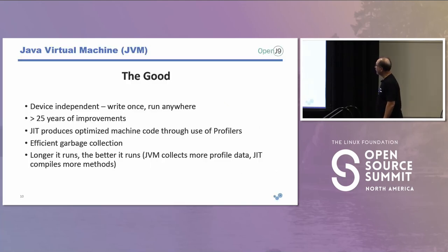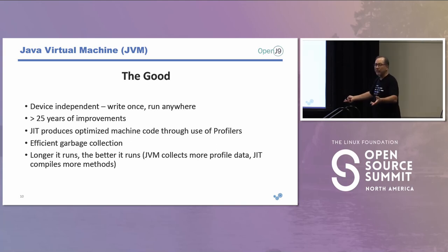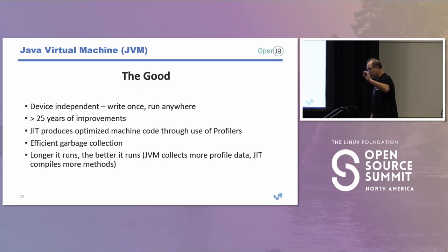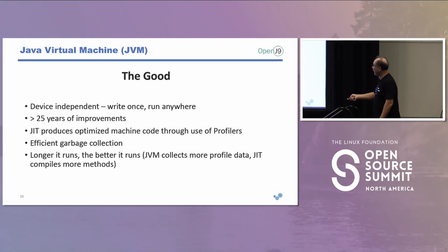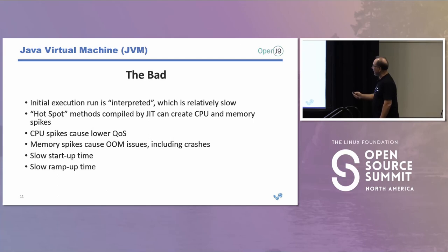The JVM itself has been around for 25 years at least. It's device-independent — that's the whole promise of Java. The JIT produces optimized machine code: when the JVM starts up, it runs profilers on your code, identifies the hot methods, and compiles them — potentially multiple times — so your code becomes very efficient. We have efficient garbage collection; the longer it runs the better it gets. The bad: that initial execution is interpreted, byte by byte, very slow relatively.